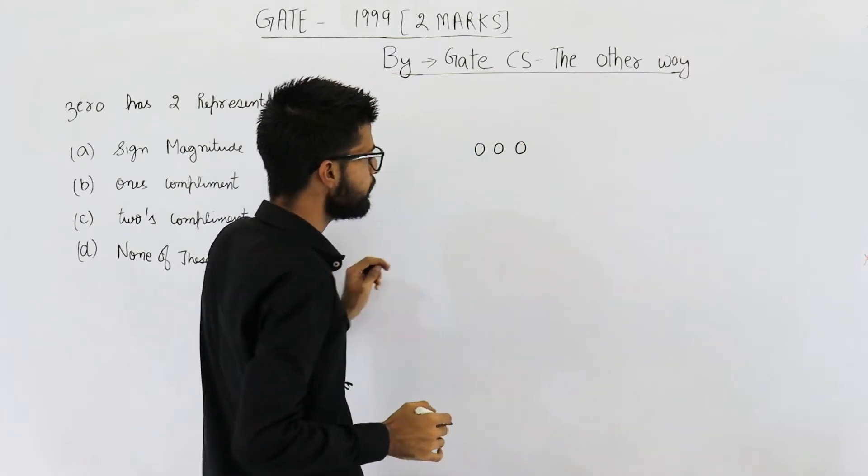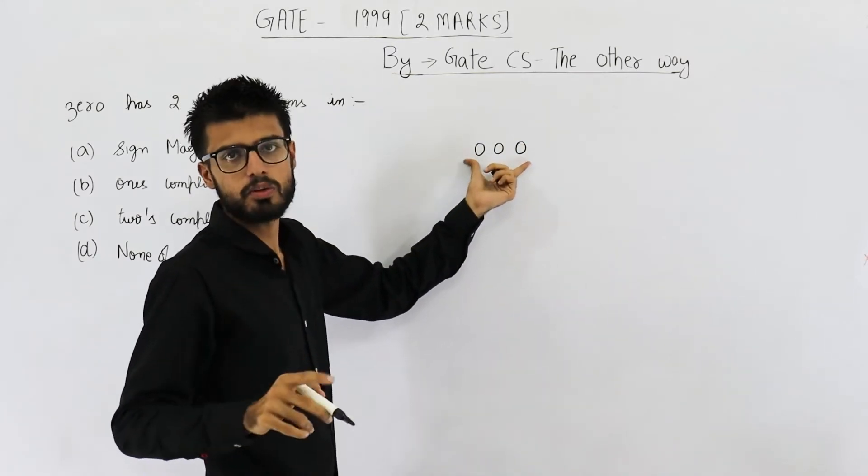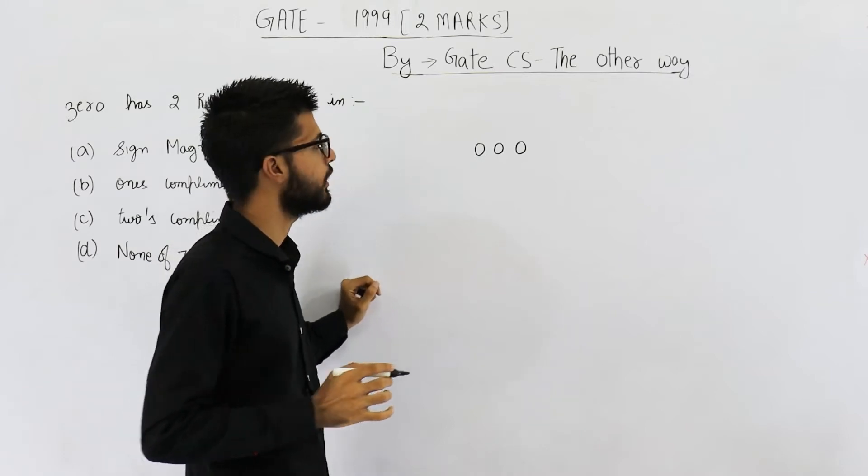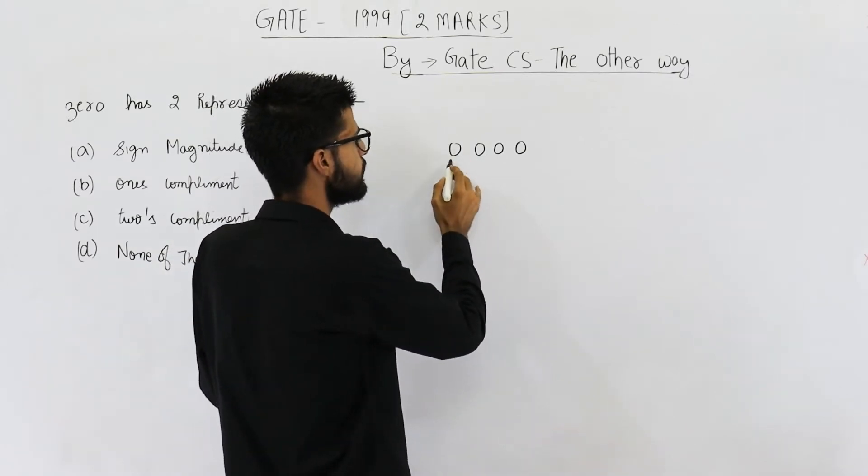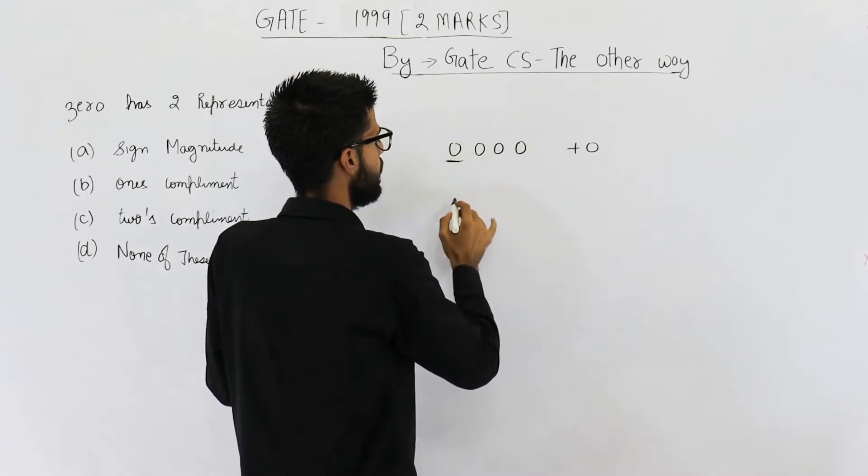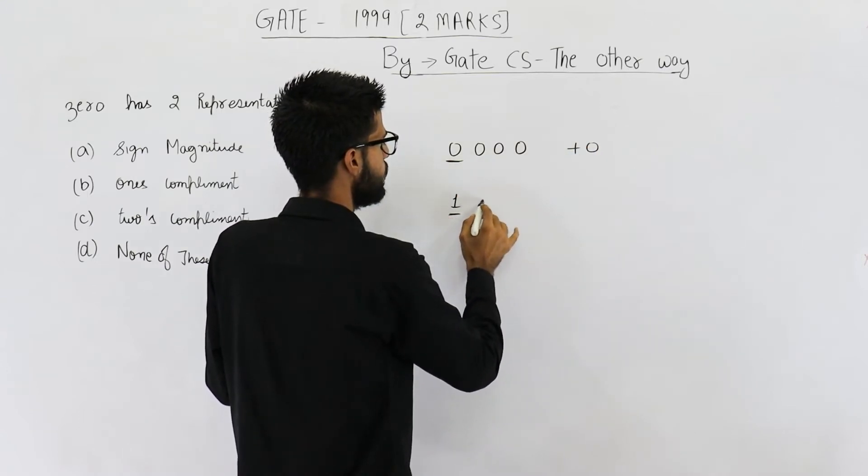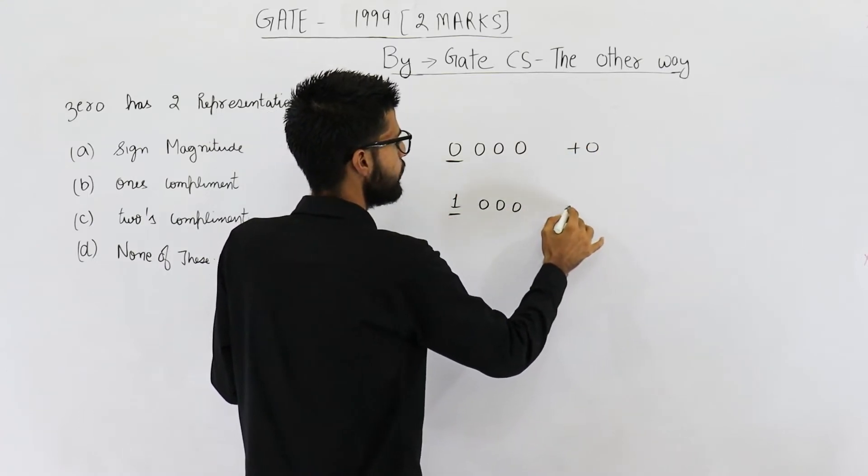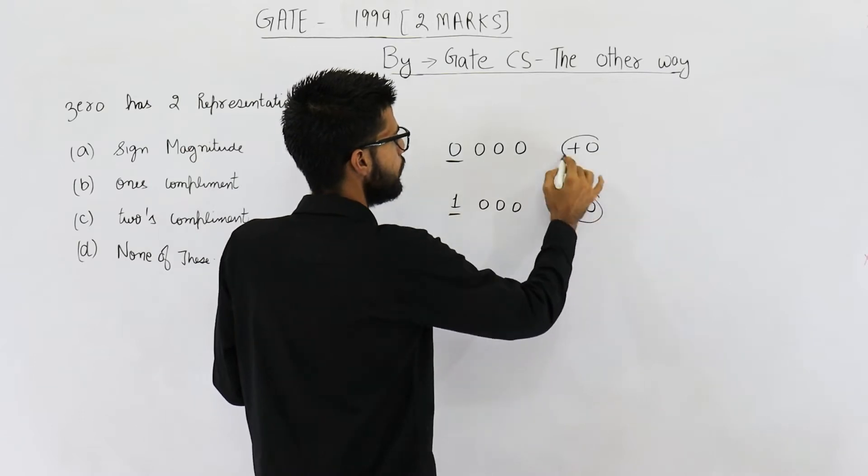So if magnitude is zero, number will be zero. Sign can either be positive or negative. That means if you have sign as zero, this is plus zero. And if the sign is one, magnitude is zero, this will be minus zero.